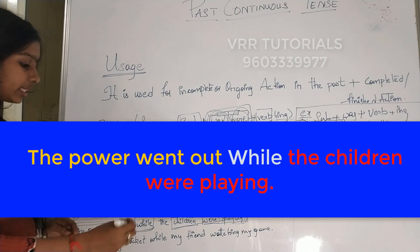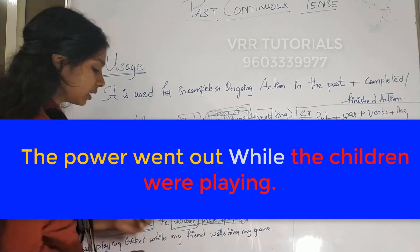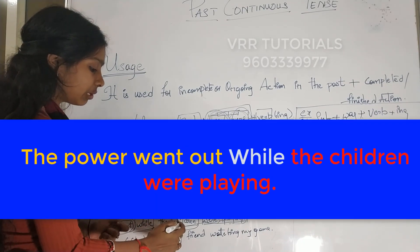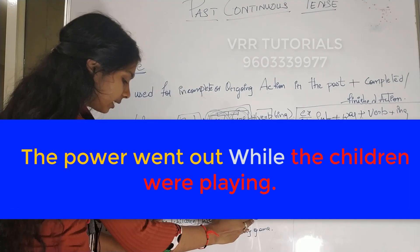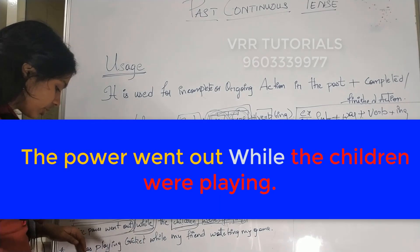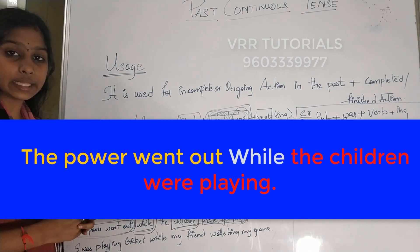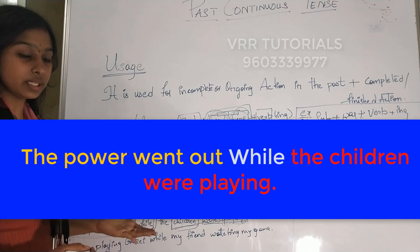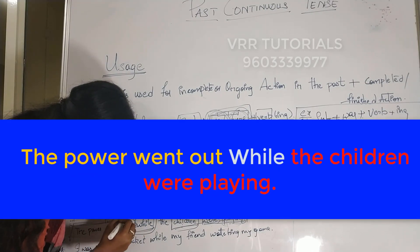Third example: Children were playing. 'Children' is the subject — it is like 'they', so we use 'were' as helping verb. Children were playing — verb plus -ing form. This sentence is in past continuous tense. Apart from 'when', we can also use the conjunction 'while'. The power went out — that is already a completed action, so it comes under simple past tense.